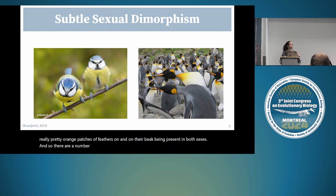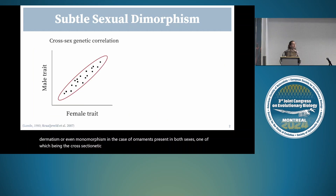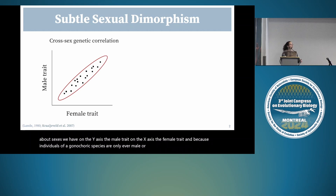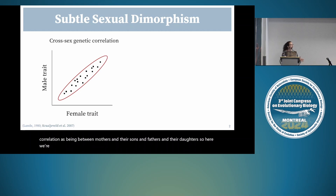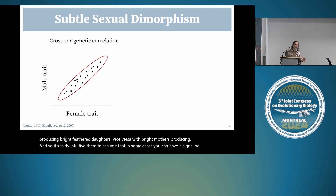There are a number of hypotheses to explain cases of subtle sexual dimorphism or monomorphism in ornaments present in both sexes, one being the cross-sex genetic correlation hypothesis. For a shared trait expressed in both sexes, with male trait on the y-axis and female trait on the x-axis, because individuals of gonochoric species are only ever male or female, we estimate this correlation between mothers and their sons and fathers and their daughters. So bright-feathered males produce bright-feathered daughters, and vice versa—bright mothers produce bright sons.